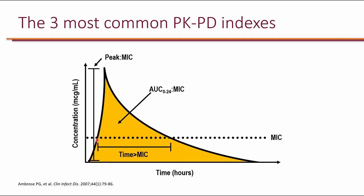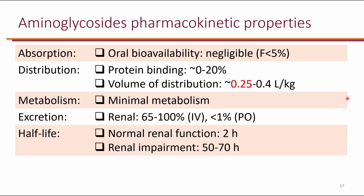The time above MIC represents how long concentration stays above the MIC during the dosing interval. The bioavailability of aminoglycosides is negligible—less than 5% is absorbed orally, so the majority are IV formulations. Oral aminoglycosides are used only for GI purposes, not systemic infections. For most patients, the volume of distribution of aminoglycosides is 0.25 liters per kilogram. Aminoglycosides are primarily excreted renally, with a half-life of about 2 hours in someone with normal renal function; however, in renal impairment, the half-life could be 50 to 70 hours.